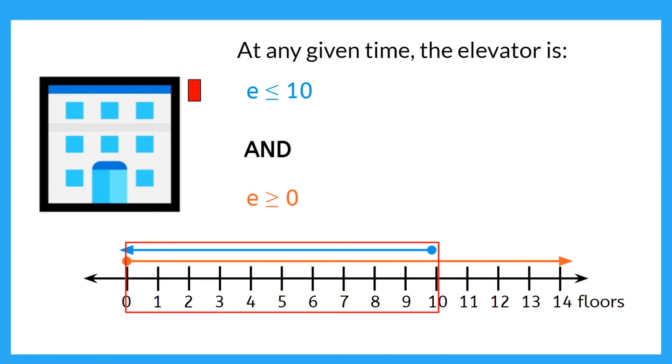Why is that? Well, imagine we say E is 12. That makes our orange inequality true. But does that make sense? No way! That would mean our elevator has exploded out of the roof of our building.